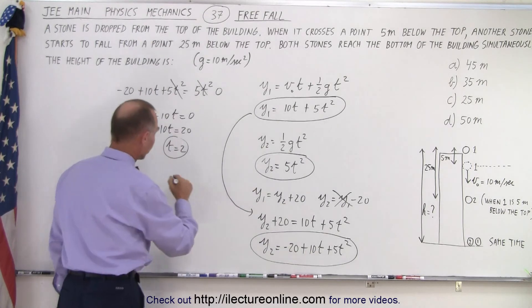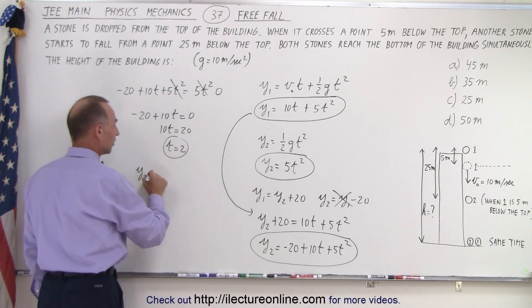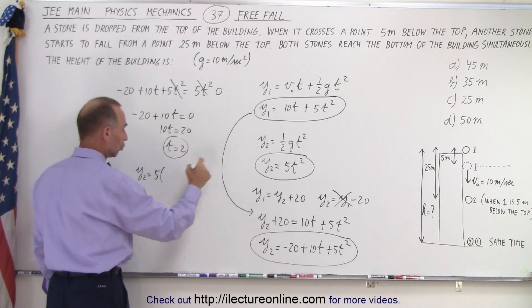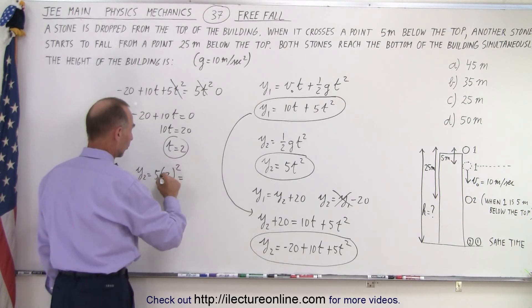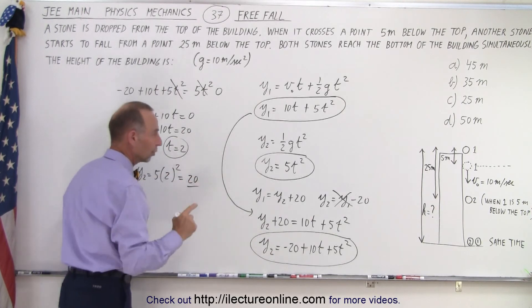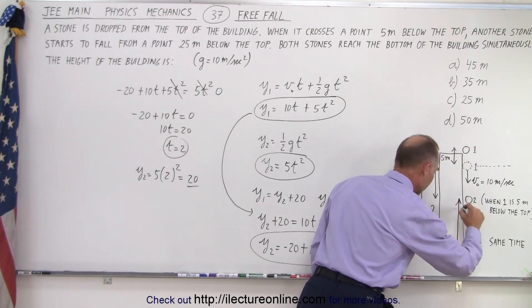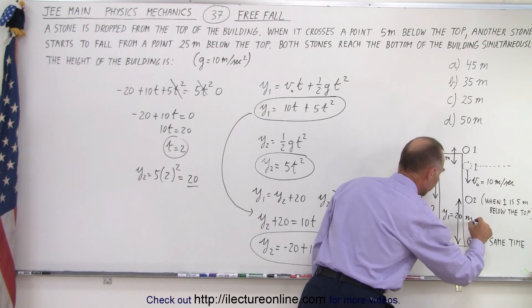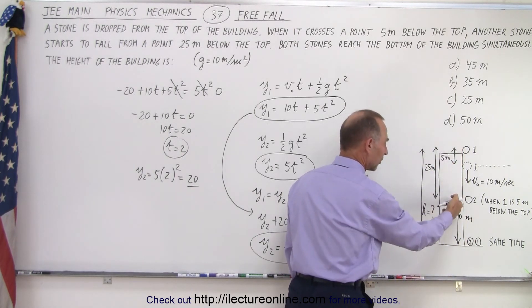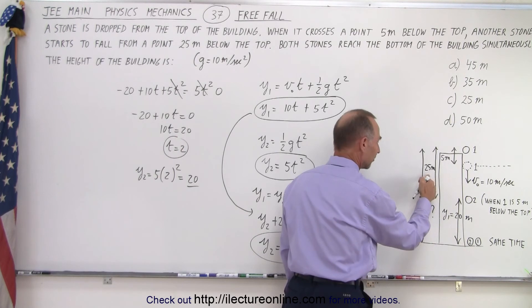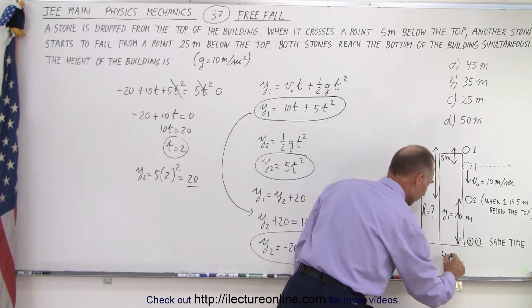To find out what y2 is equal to, we say y2 is equal to 5 times 2 squared, which is 4 times 5, which is 20. In other words, y1, which is this height right here, that's y1. y1 equals 20 meters. And since it's dropped 25 meters below the top of the building, 20 plus 25 gives us 45 meters.